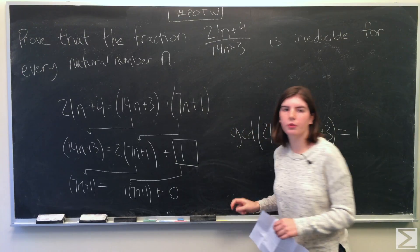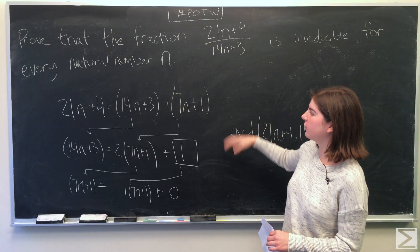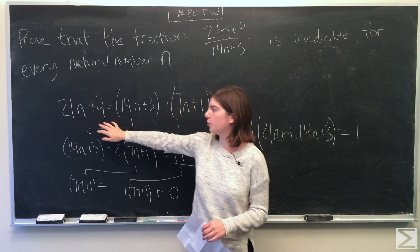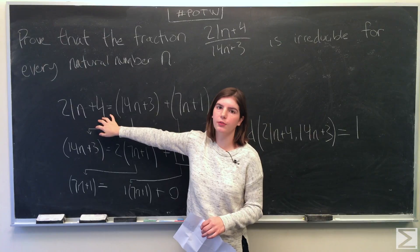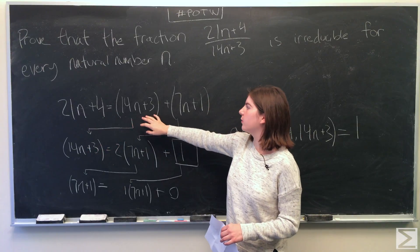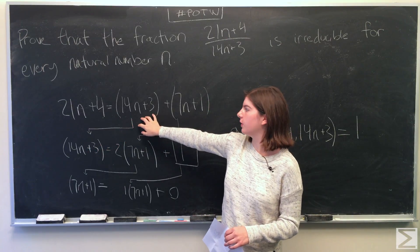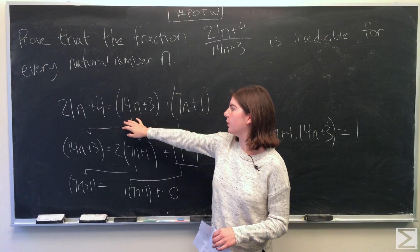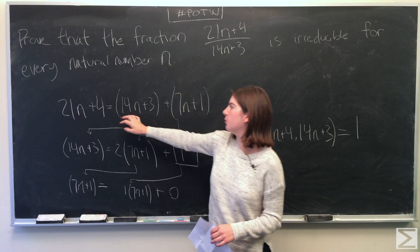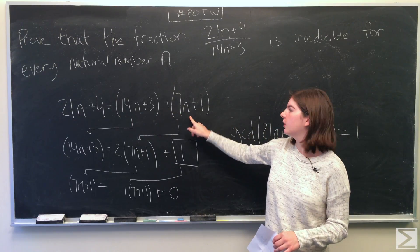So with Euclidean's algorithm, you take the larger of the two numbers, which in this case is 21n plus 4, and you divide it by the smaller one, 14n plus 3. That's just 1, and we get a remainder of 7n plus 1.